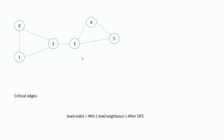It might not make any sense right now, but let me go through the entire process and it will make a lot of sense. We will start from vertex zero. Initially, the level is zero and low is exactly the same as its level. Now we will apply the depth-first search algorithm. We can choose any neighbor from one or two — let's go to two. The level for two will be one and low for two will be exactly the same as its level. From two, I can call one, and the level of one will be two and low will be two.